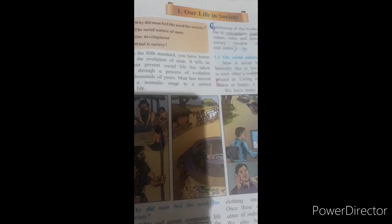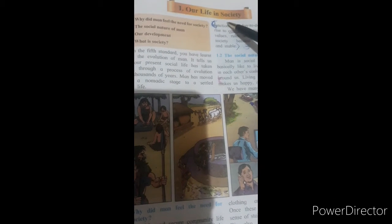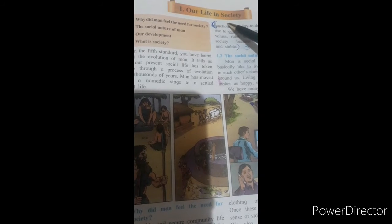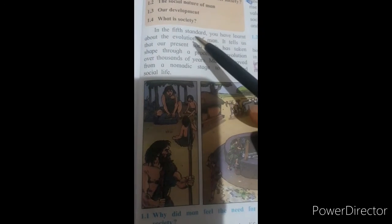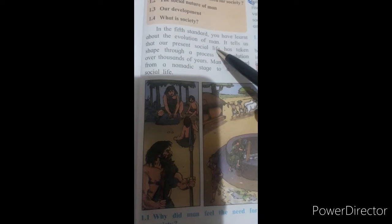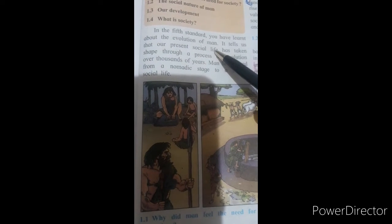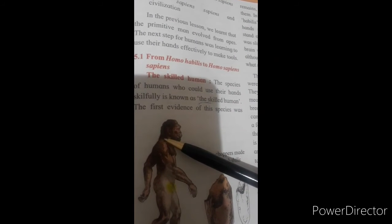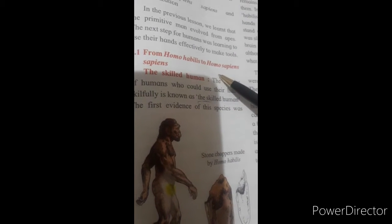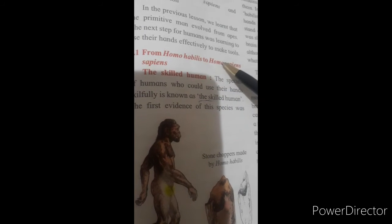Hello dear students, let's start civics lesson number 1, our life in society. In 5th standard, you have learned about the evolution of man. Evolution of man means a journey of man from Homo habilis to Homo sapiens sapiens. Do you remember?